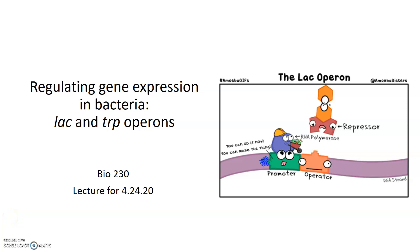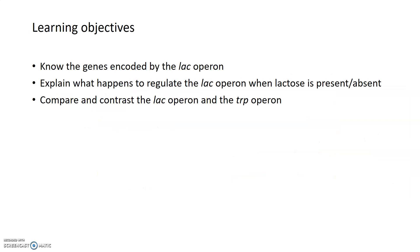This is the second half of a lecture on gene expression and regulating it from April 24, 2020, focusing mostly on two particular operons in bacteria: the lac operon and the trp operon. The main goals of this lecture are to explain what the lac operon is and what genes are encoded by it, to talk about the mechanism of the lac operon and what happens when lactose is present and absent in the cell, and then compare the lac operon to the tryptophan operon.